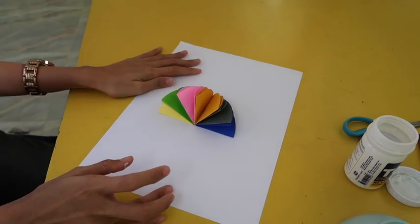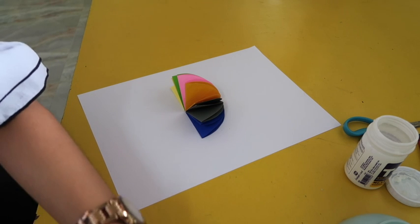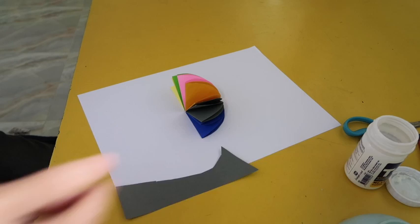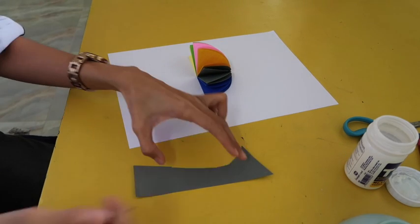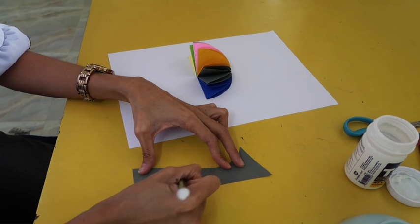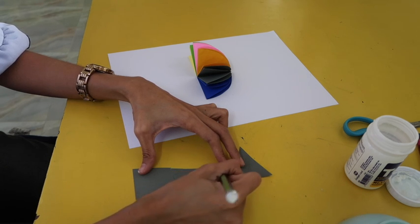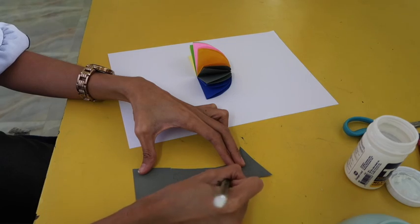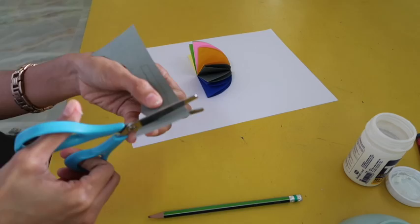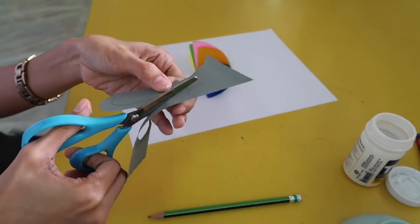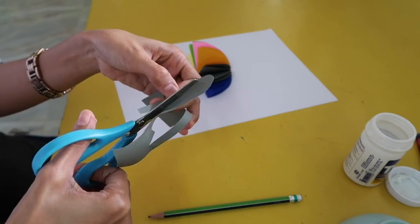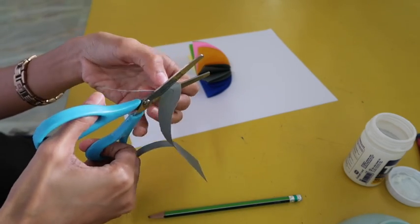After that, I am going to get a piece of paper, any color, but I am going to use color gray and I will just make a handle. So let's draw a handle of our umbrella.